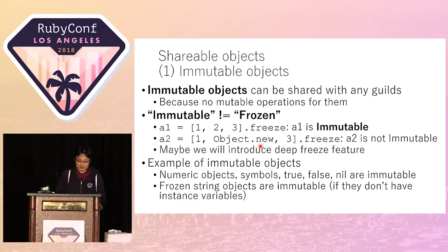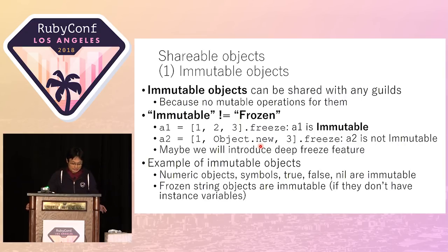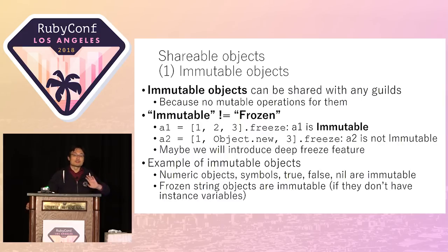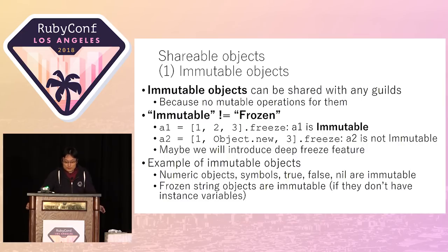So we need to care about that. We may need to introduce some deep-freeze syntax or methods. Also, numeric objects, symbol objects, and some literal objects are immutable so you can share them easily. Frozen string objects are immutable if they don't have instance variables.